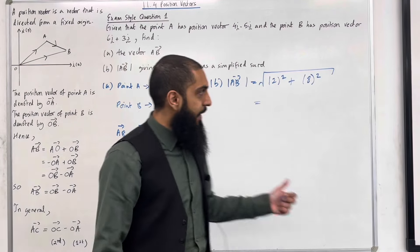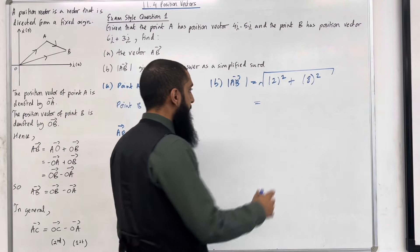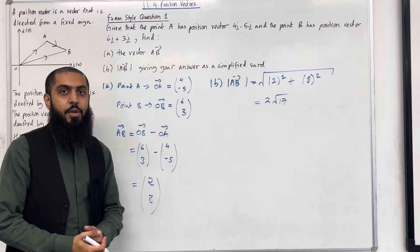Okay, so we can work this out. If I put this into my calculator as a simplified surd, I get 2 square root 17. This completes exam style question 1.